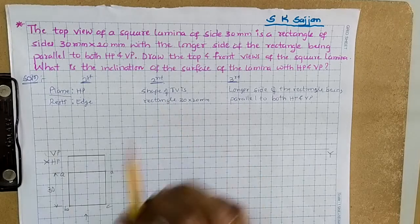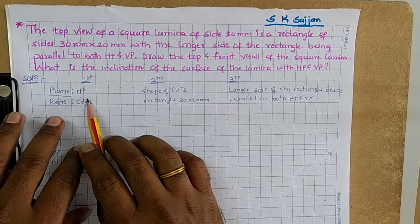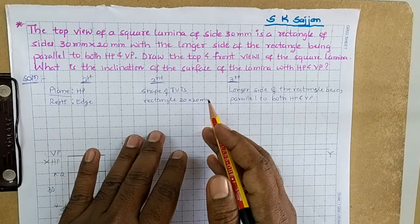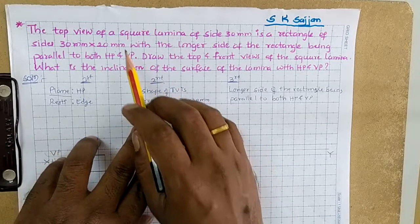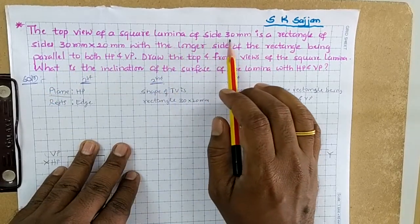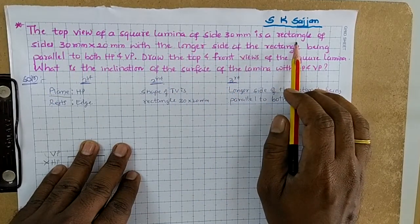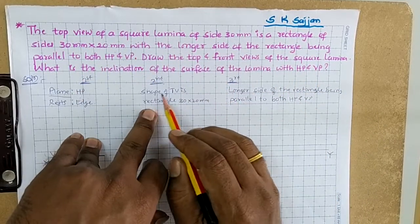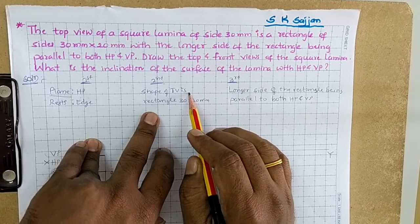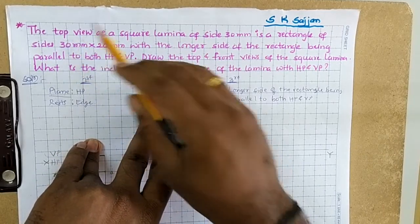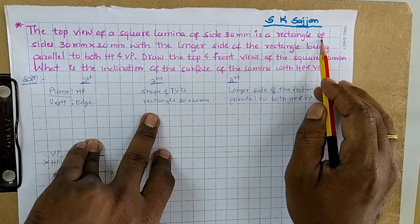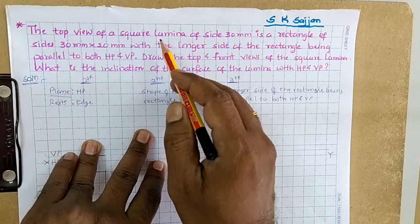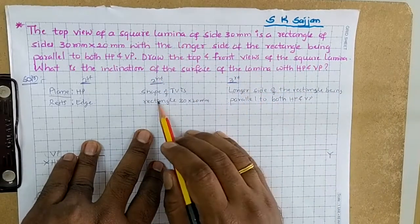We identify the details of the second portion — it is not given directly whether it is HP or VP. The details given for the second portion are: the top view of a square lamina of side 30 mm is a rectangle. So the shape of the top view is given for the second portion. The top view is a rectangle, and the given name of the lamina is square — meaning the top view of the square lamina is a rectangle.